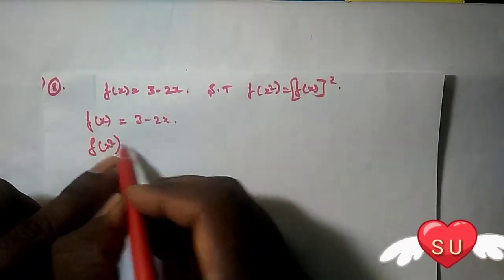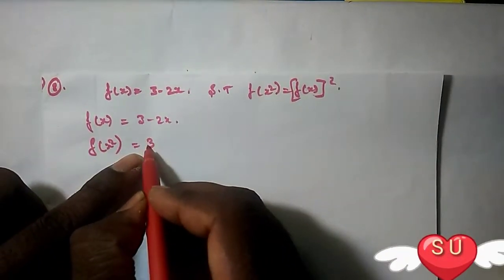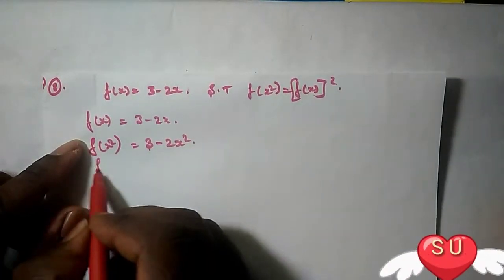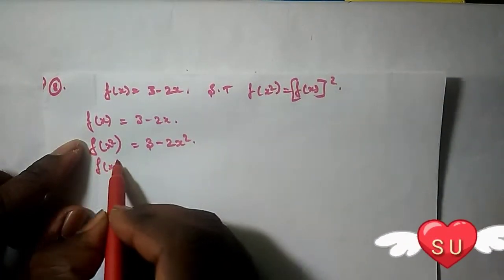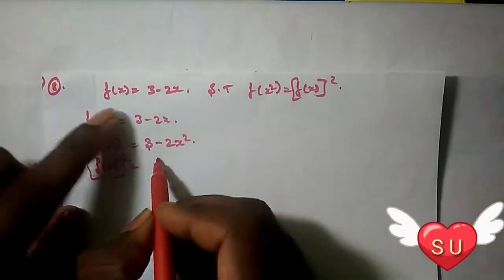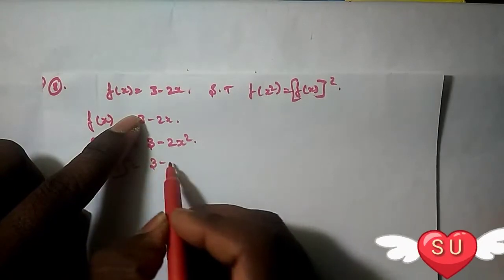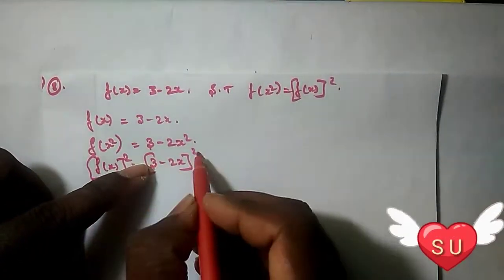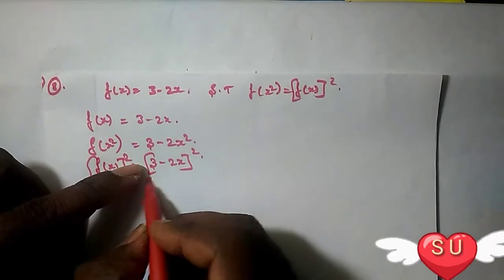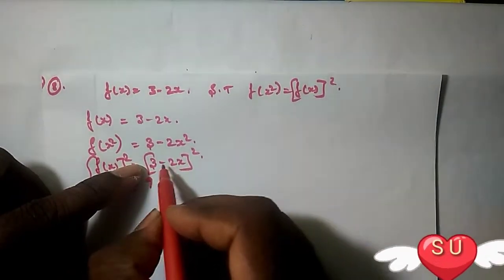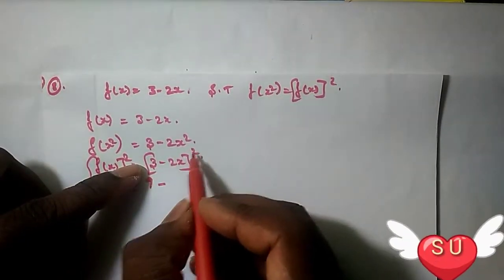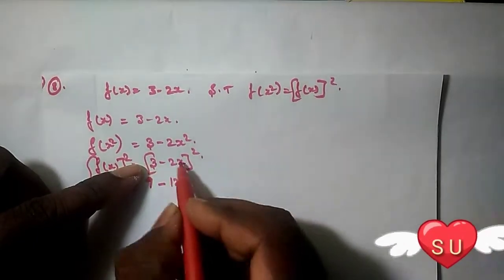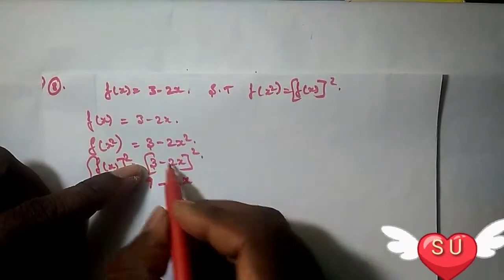To find f(x²), we substitute x² into the function: f(x²) = 3 minus 2x². Next, for [f(x)]² whole square, we have f(x) = 3 minus 2x, so [f(x)]² = (3 minus 2x)². Expanding: 3² minus 2 times 3 times 2x, which gives 9 minus 12x plus 4x².